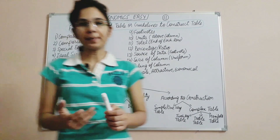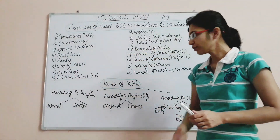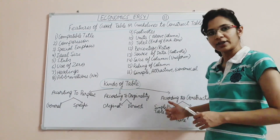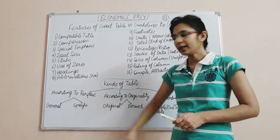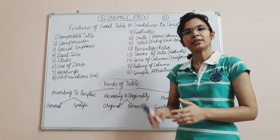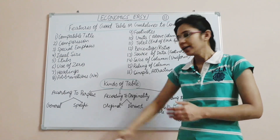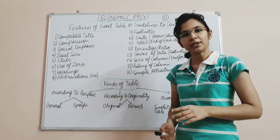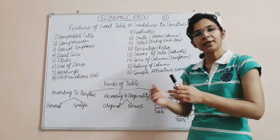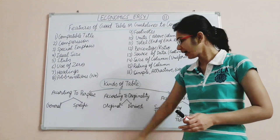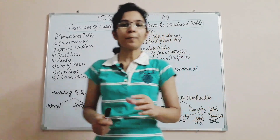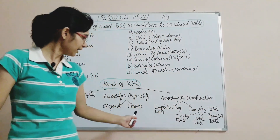Now come the kinds of tables. Basically, tables are divided according to purpose, according to originality, and according to construction. According to purpose, tables are divided into two parts: general purpose and specific purpose. If a table is for general use — useful for everyone — it is a general table. If it is for a specific particular thing, it is a specific table. According to originality, if data is kept in original form as collected, it is an original table. If data is converted into percentage or ratio form, it is called a derived table.